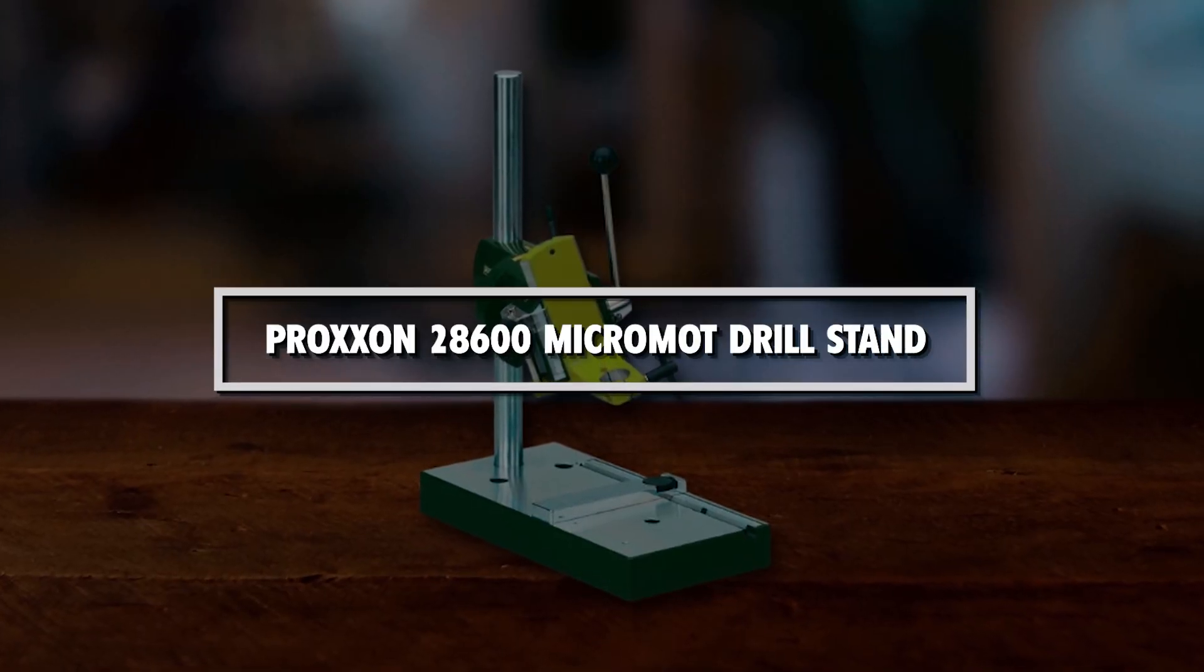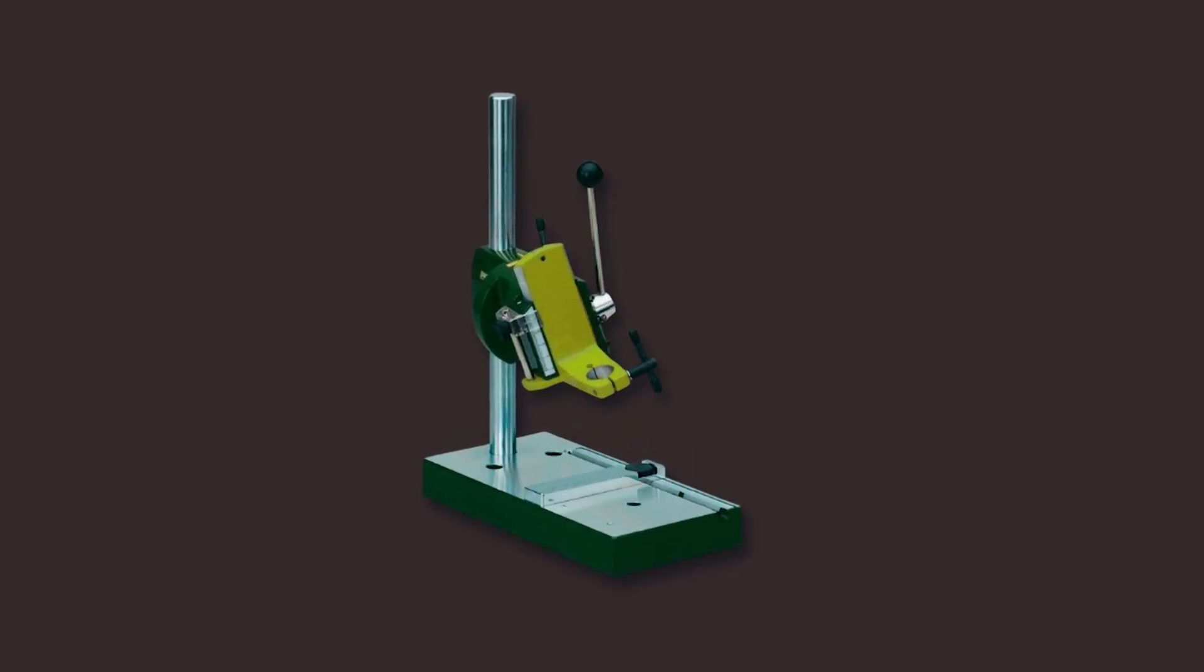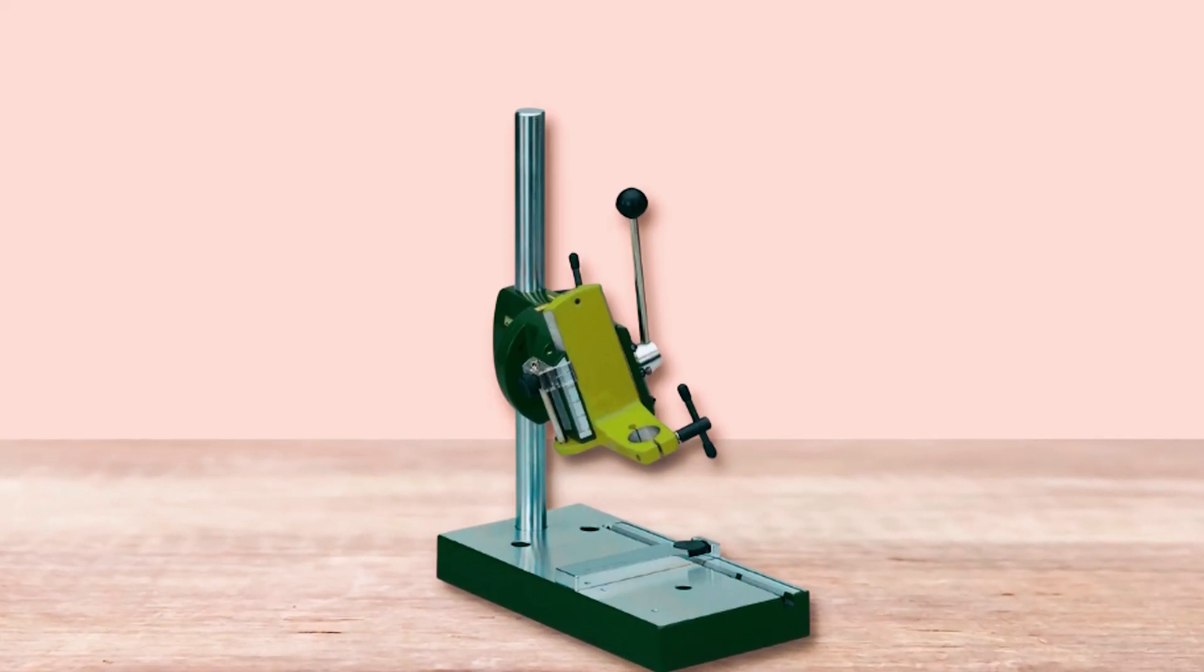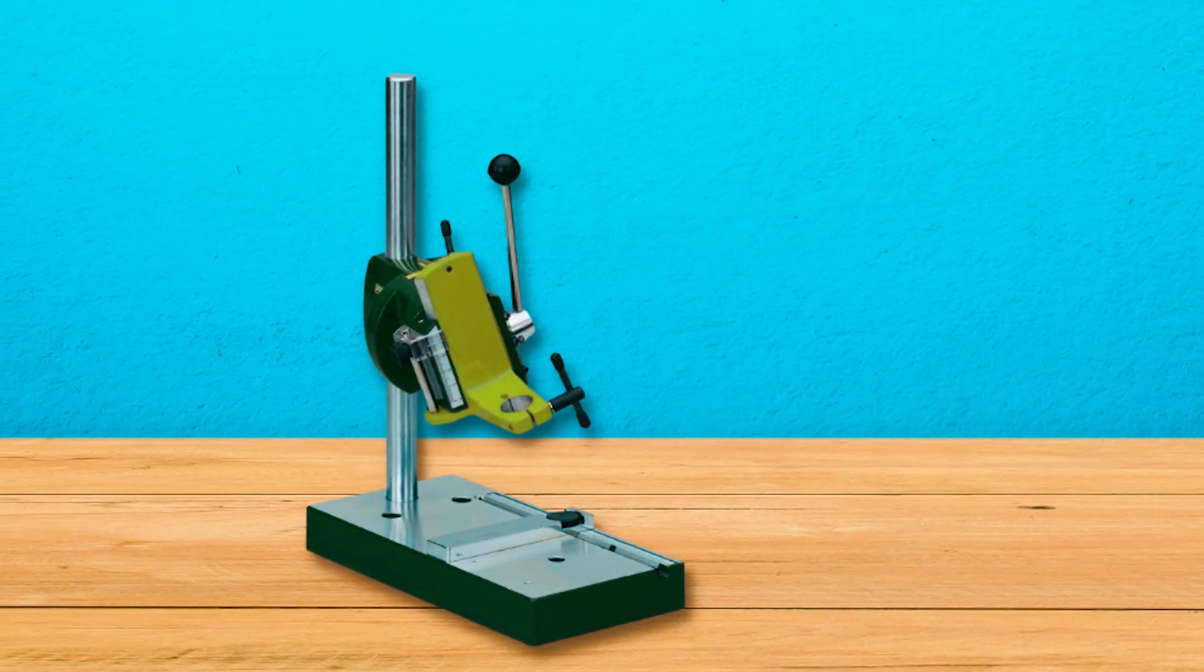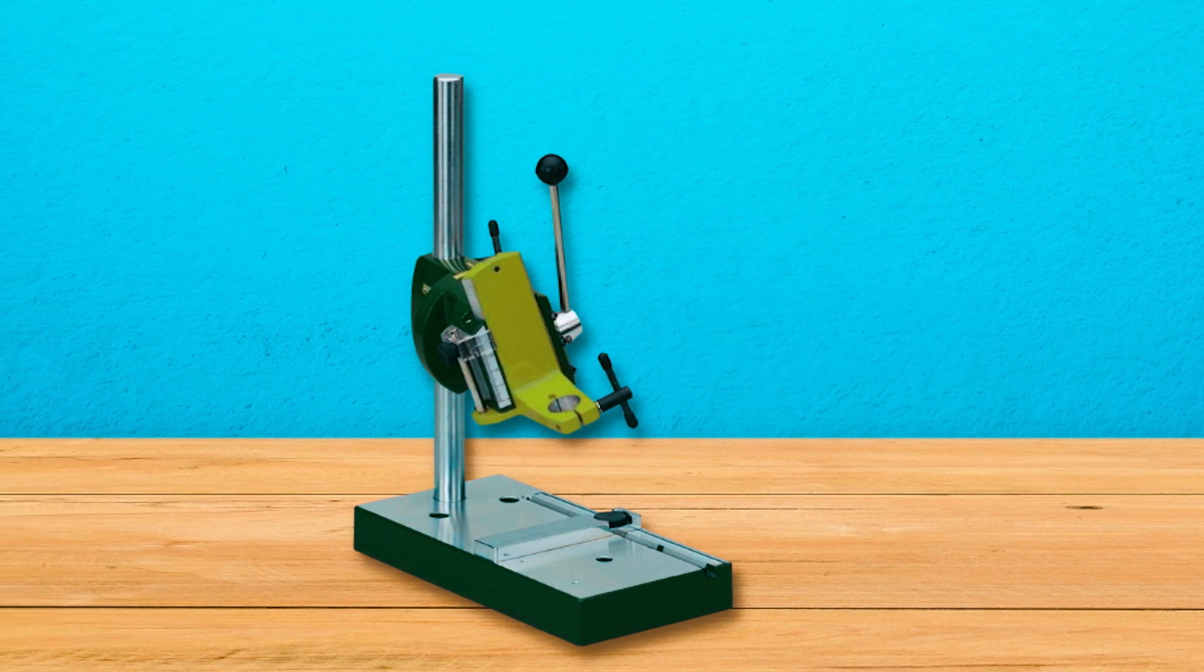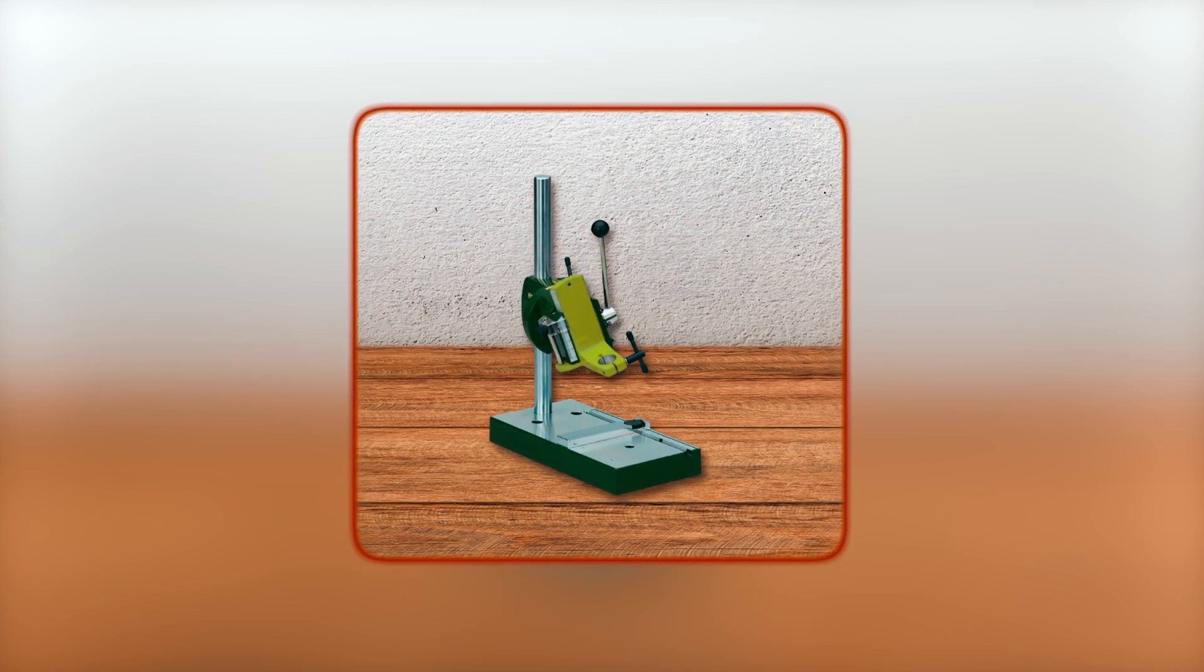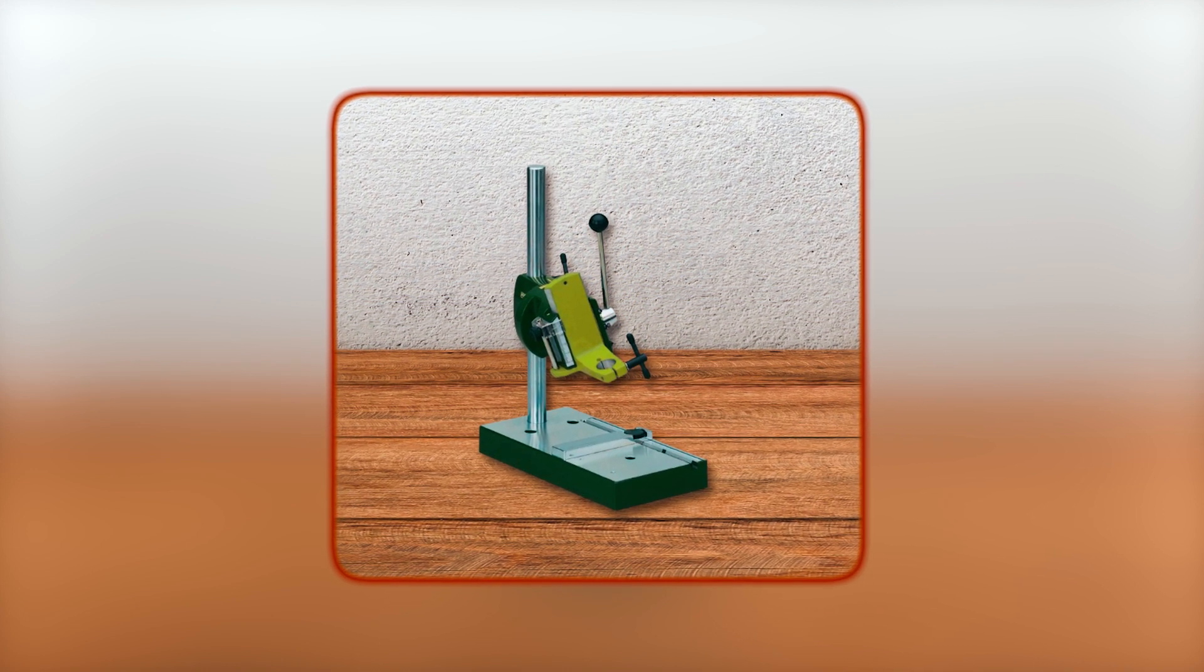Proxen 28600 Micromet Drill Stand. The Proxen 28600 Micromet Drill Stand MB200 is a versatile and durable drill stand that provides precision and control for beveled drilling and milling operations. The stand has a tiltable head and dovetail guide that can be adjusted to 90 degrees, allowing for a wider range of drilling and milling operations. The drill stand also features a drill depth scale with an adjustable limit stop, allowing for precise and consistent drilling depths up to 1 1/2 inches.